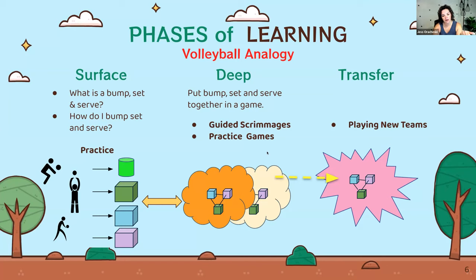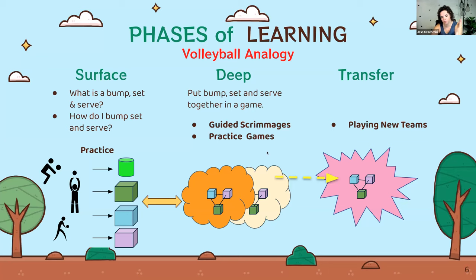With this analogy in mind, we don't stop practicing the surface. When you get to college volleyball, you don't stop practicing bumping and setting and serving. You might even get new things to improve those skills, so you're constantly going back to that surface level. When we learn those new things, we move to the deep, and this continues as we build our skills and understanding of the game.